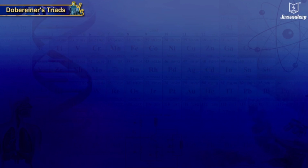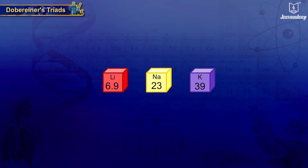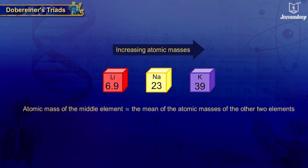When these triads were arranged in order of their increasing atomic masses, he observed that the atomic mass of the middle element was approximately the mean of the atomic masses of the other two elements.